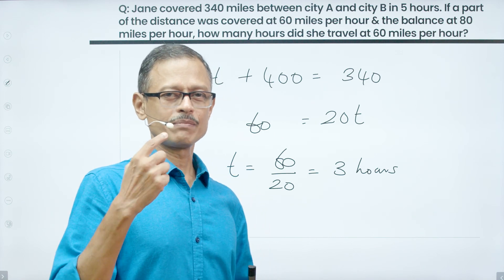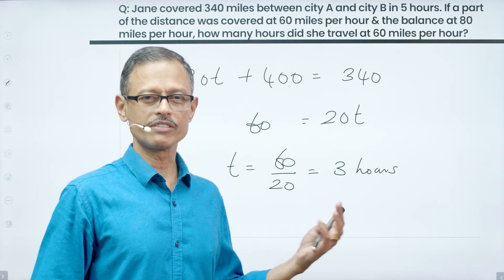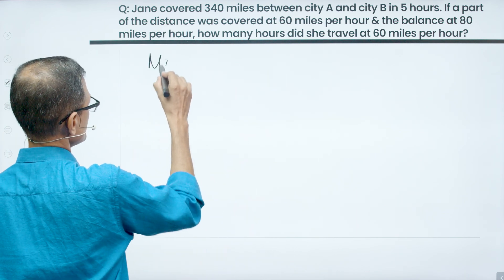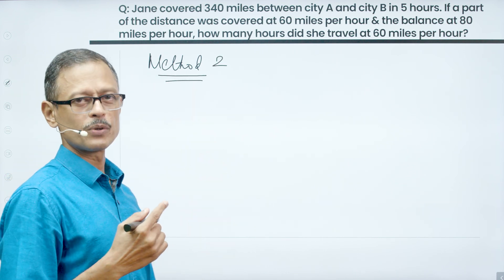We'll do it a little differently. As I said method 2. This is perfectly all right. It doesn't take more than 45 seconds as you would have realized. Method 2 is using the rule of allegation. So how are we going to proceed with method 2?